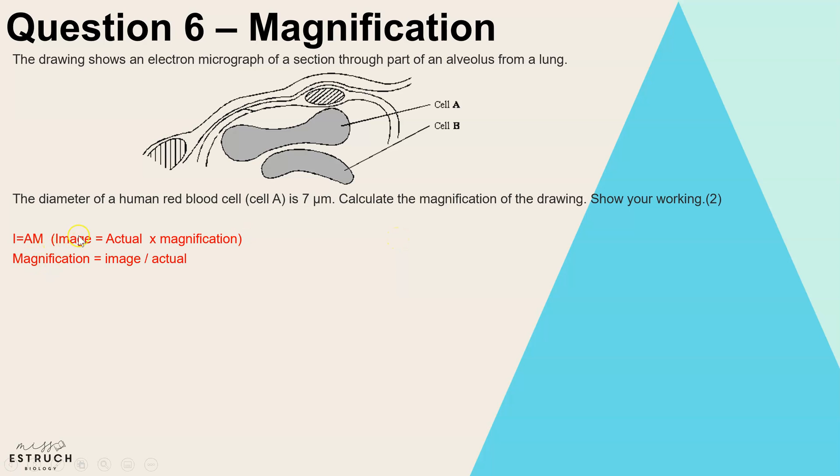So the formula is I equals A times M. That's how I remember it, which is image equals actual times magnification. Now we need to rearrange that formula to make magnification the subject. So magnification is image divided by the actual. And the only piece of information we have here is the actual size is seven micrometers. We're working out the magnification, so that means to get the image size, you would have to use your ruler and measure the diameter of cell A.